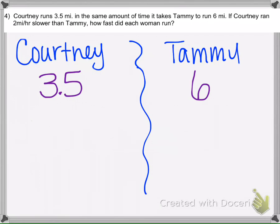Well obviously one of them has to go faster than the other. So it says that Courtney ran 2 miles per hour slower. So if Tammy's rate is R, then this girl is 2 slower, so minus 2.